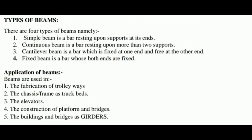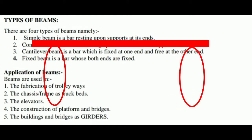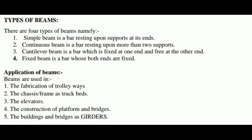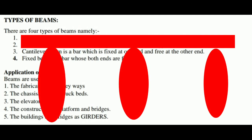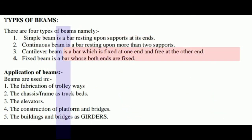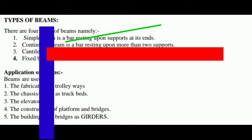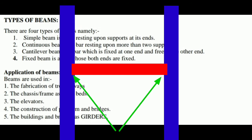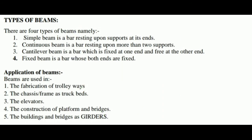A simple beam is a bar that rests upon supports at its ends. A continuous beam is a bar resting upon more than two supports. A cantilever beam is a bar that is fixed at one end while the other end is free to move. A fixed beam is a bar that is fixed at both ends. These are the four types of beams.